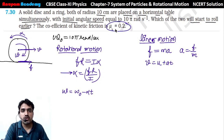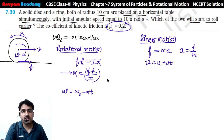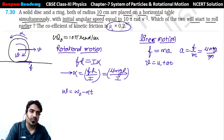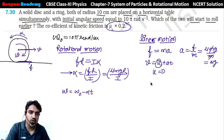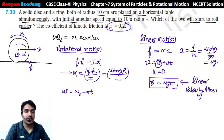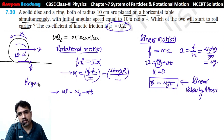Yahan par friction coefficient de rakha hai - kinetic friction coefficient mu = 0.2. Sab se pehle hum friction ka value find kar lete hain - that is equal to mu·mg. So alpha = mu·mg·r / I. And for linear: a = F/m = mu·mg/m = mu·g. Initial velocity u = 0, so v = at = mu·g·t. This is the linear velocity after time t. And omega = omega₀ - (mu·mg·r / I)·t - that is the angular velocity after time t.